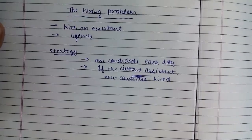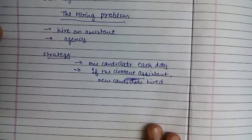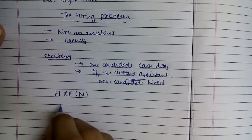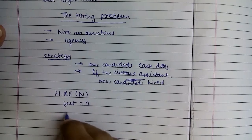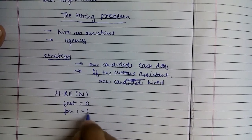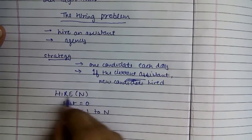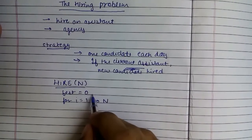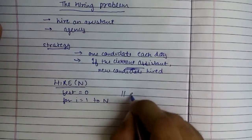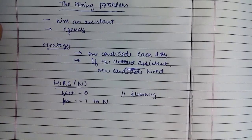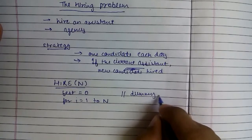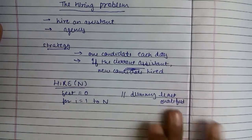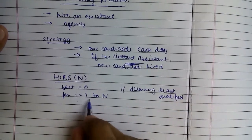The strategy is simple but there are some flaws in it. First, let's see the algorithm we are using. This is the pseudo-code of the algorithm. Best zero is like a dummy candidate — my initial candidate — and it is the worst, least qualified. The agency is sending N candidates, one each day.